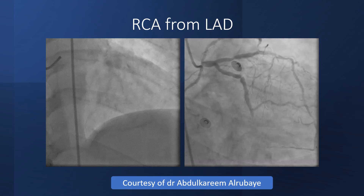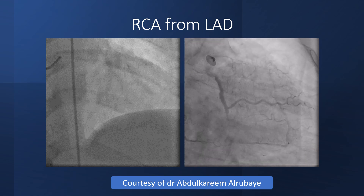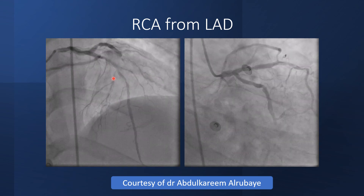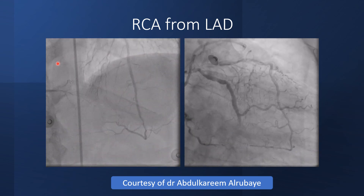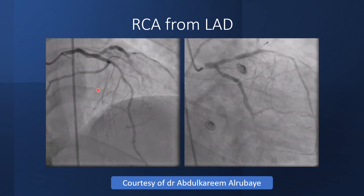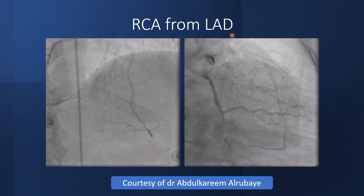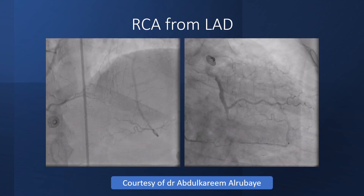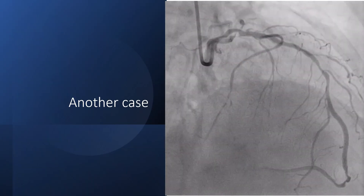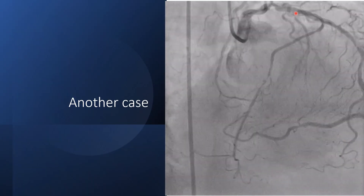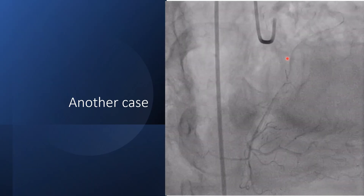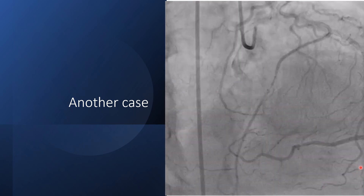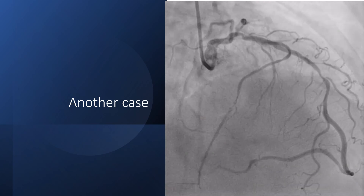Another anomaly is the RCA arising from the LAD. You can see the RCA arising from the mid or proximal part of the LAD in both the apicranial and aero-caudal views. This is another case of RCA arising from the LAD, where the PDA is actually arising from the distal LAD.